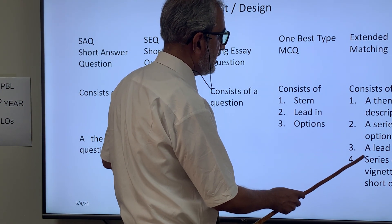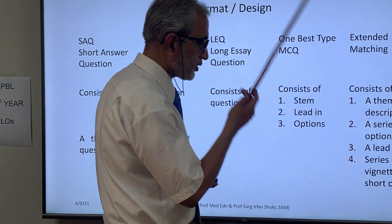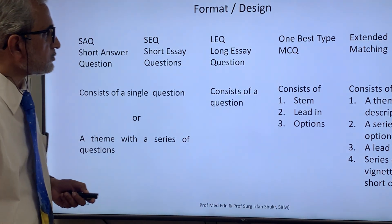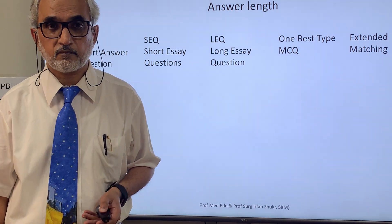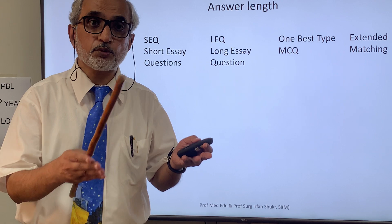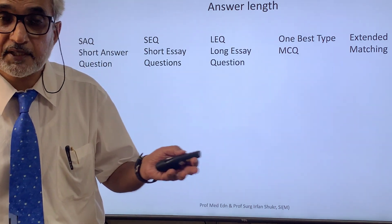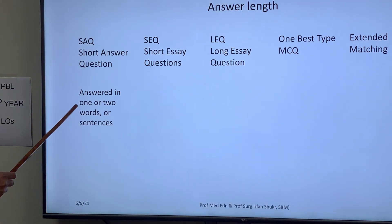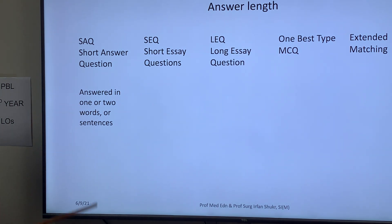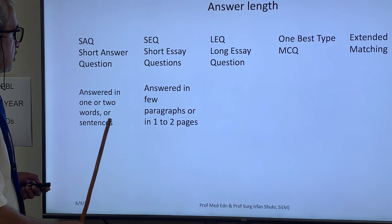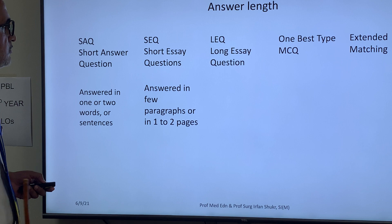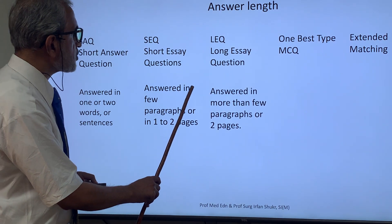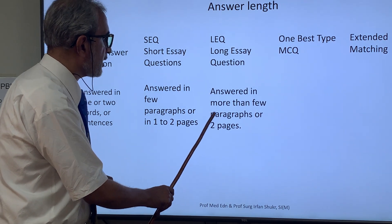An extended matching question has a lead-in, a series of short cases, and options. An important distinguishing factor is the length of the answer and the freedom provided to the student. Short answer questions are answered in one or two words or sentences. Short essay questions are answered in a few paragraphs or one to two pages. Long essay questions require answers of more than two paragraphs or two pages.